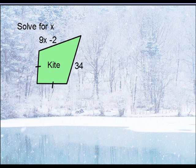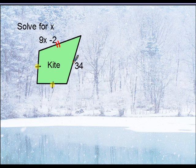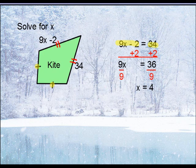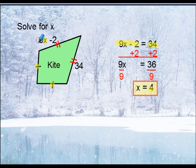Let's say that we know a figure is a kite and we're given this situation — determine the value of x. Because it's a kite, you know that you have two pairs of congruent sides. Since these two are already marked, those two should automatically be congruent as well. Since those two sides are equal to one another, you write an equation: 9x minus 2 equals 34. The rest is just algebra — subtract 2 from both sides, then divide by 9 to get your solution. You can check by plugging x = 4 back in to confirm the side equals 34.